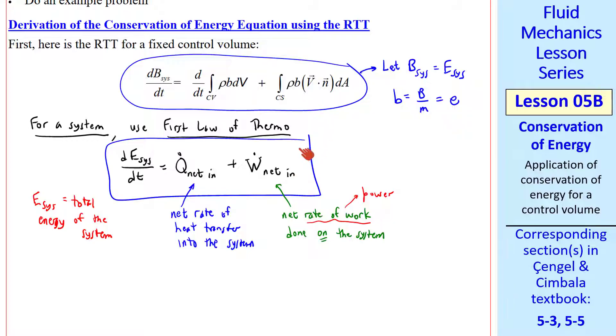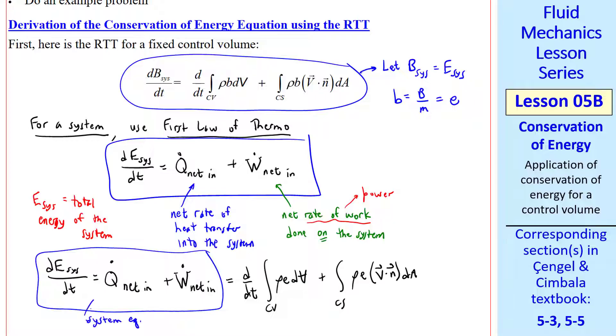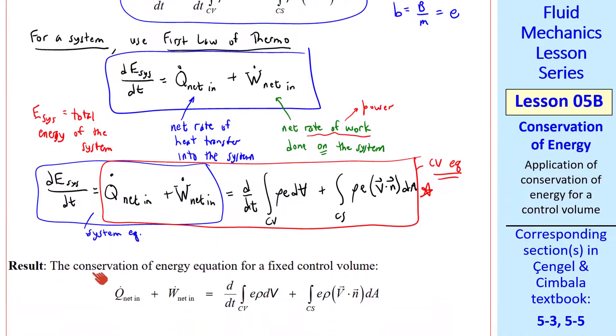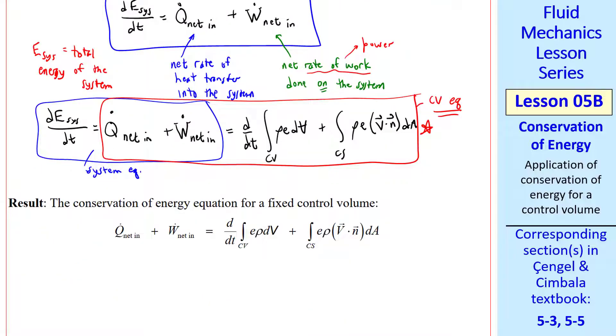Combining these two, we write dE_sys/dt equals Q̇_net_in plus Ẇ_net_in equals d/dt of the control volume integral ρe dV, plus the control surface integral ρe V⃗·n̂ dA. This left portion is our system equation, and this right portion is our control volume equation. The conservation of energy equation for a fixed control volume is given here.